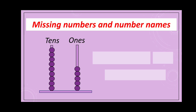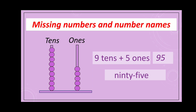Missing numbers and number names. Here in this abacus, the ones rod shows one, two, three, four, five beads. And the tens rod shows one, two, three, four, five, six, seven, eight, nine beads. So nine tens plus five ones makes the number 95. And the number name is ninety-five — N-I-N-T-Y-F-I-V-E — 95.